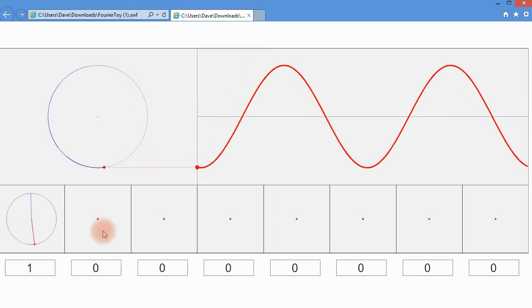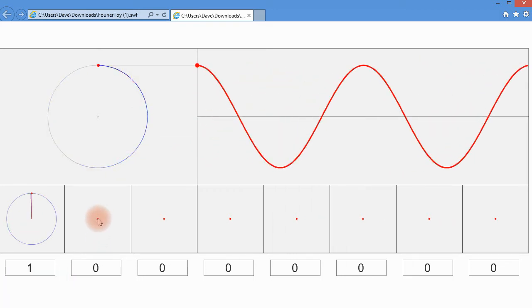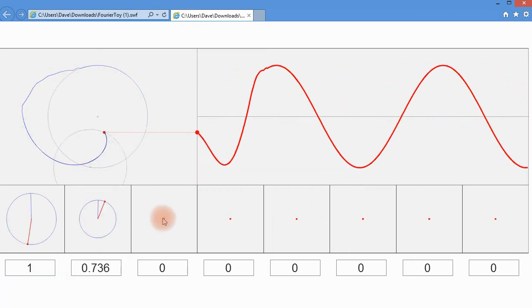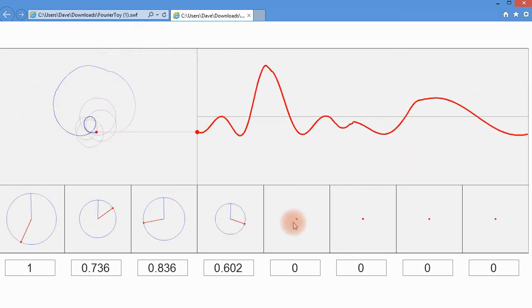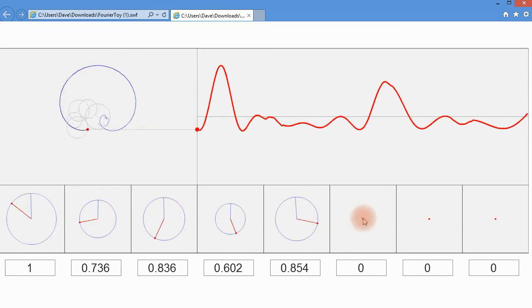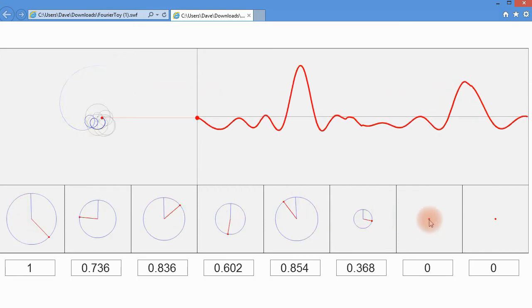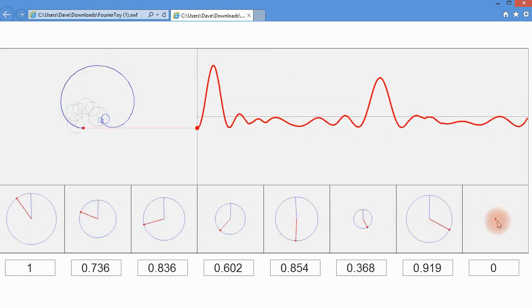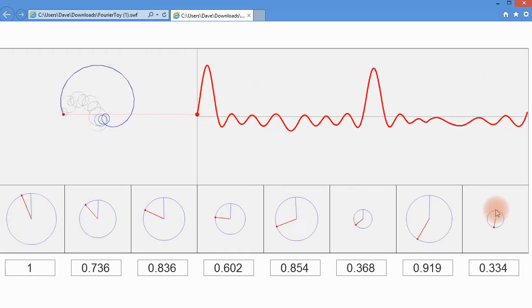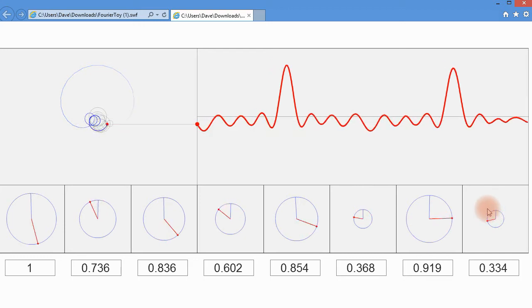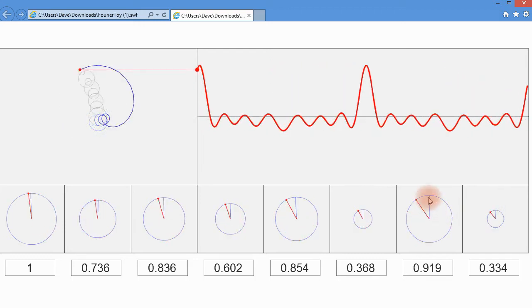Here we can observe the results of combining a particular frequency with twice that frequency, three times that frequency, four times, five times, six times, seven times, and eight times the basic frequency on the left. These are all harmonics of that frequency. While here we see only through the eighth harmonic, the FFT can deal with many thousands of harmonics.